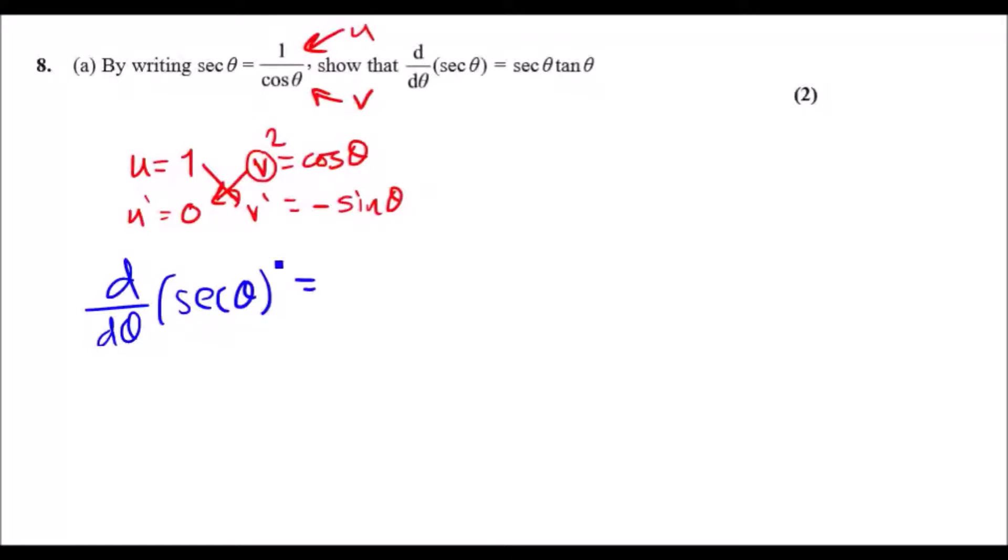It's going to equal what you said: v times u prime, so cos θ times zero is zero, minus u times v prime, so 1 times minus sin θ. Because you have a minus, there'll be plus sin θ.